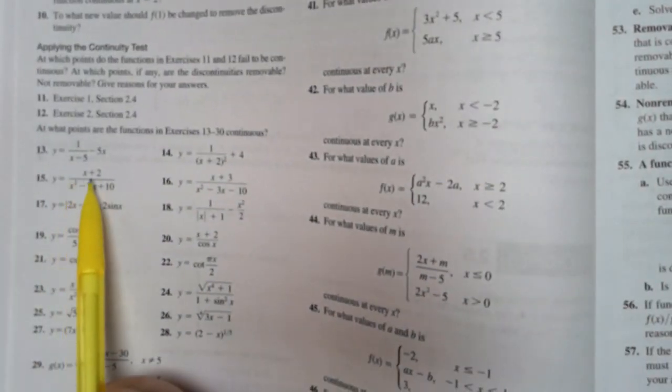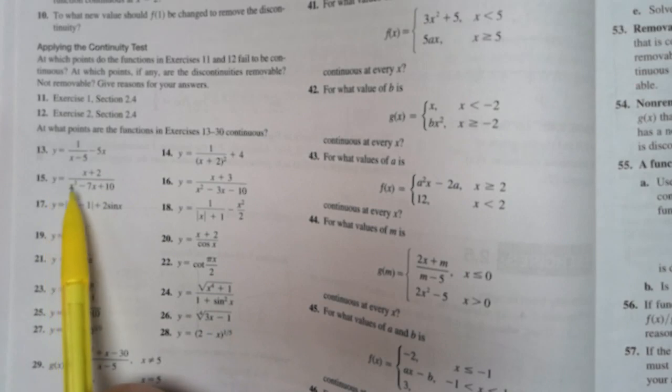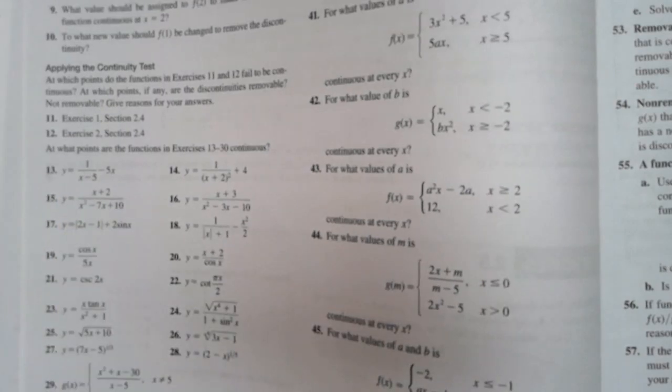So on number 15, it is x plus 2 over x squared minus 7x plus 10.